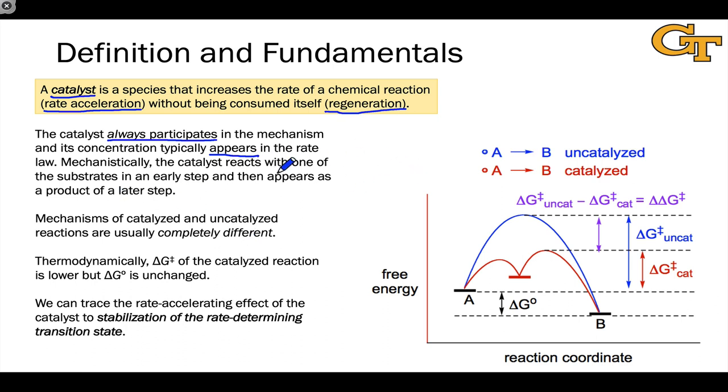And mechanistically, you sometimes see this distinction made between a catalyst and an intermediate. So just to talk about that briefly, an intermediate is something that is first generated in the course of a mechanism. Here I'm representing the intermediate as I, and then consumed in a later step before the final product is generated.